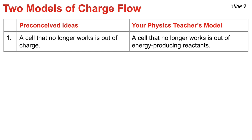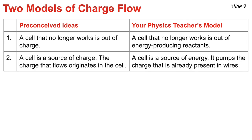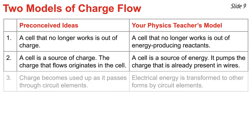Here is a summary of today's video. Instead of saying that a cell no longer works because it's out of charge, it's better to say that a cell no longer works because it's out of the energy-producing reactants that are required. Instead of saying a cell is a source of charge, and the charge that flows originates in the cell, it's better to say that a cell is a source of energy. It pumps the charge that's already present in every wire and every device within the circuit. Instead of saying that charge becomes used up as it passes through circuit elements, it's better to say that electrical energy possessed by the charge is transformed to other forms of energy by those circuit elements.